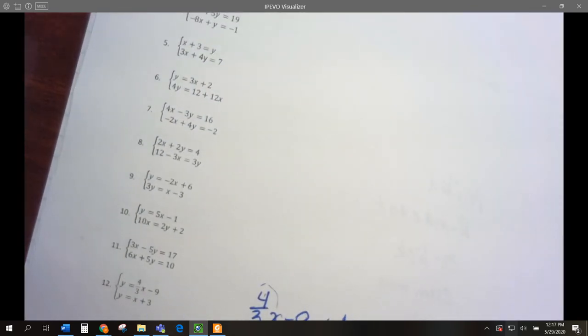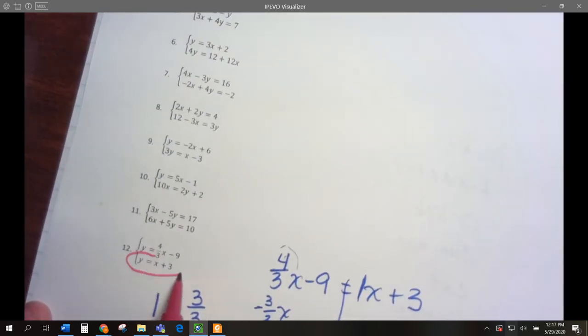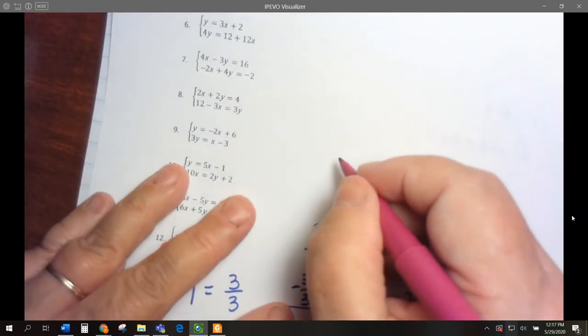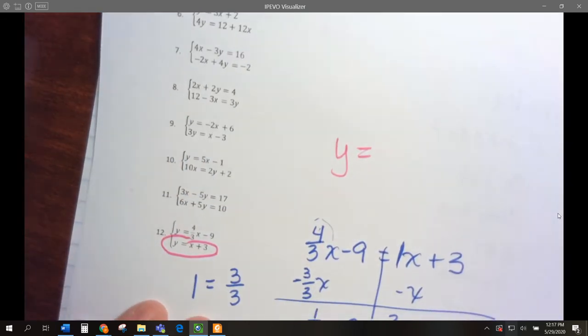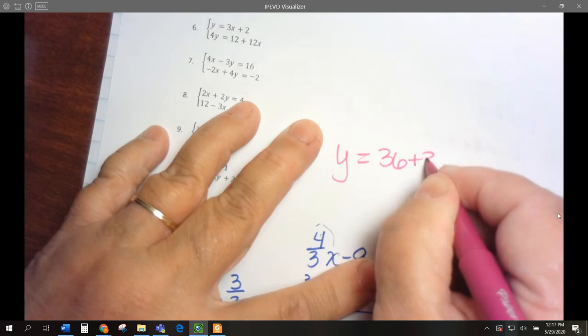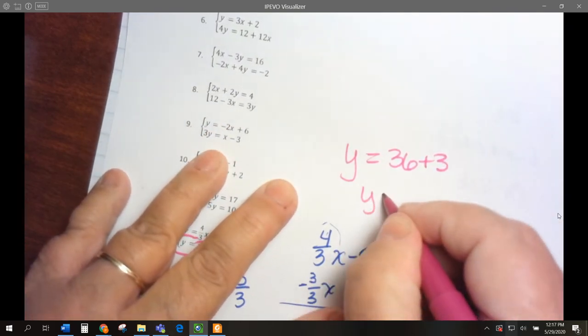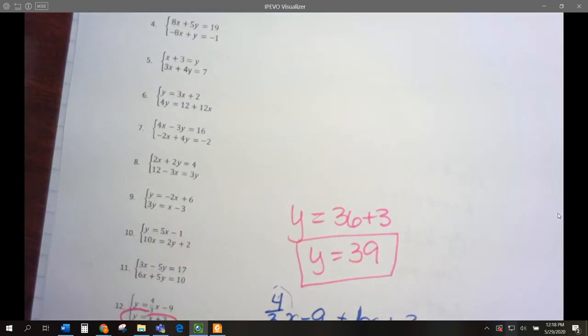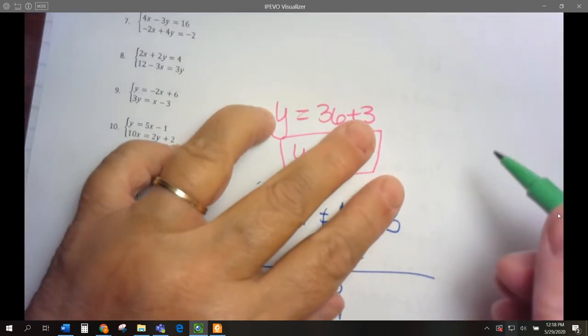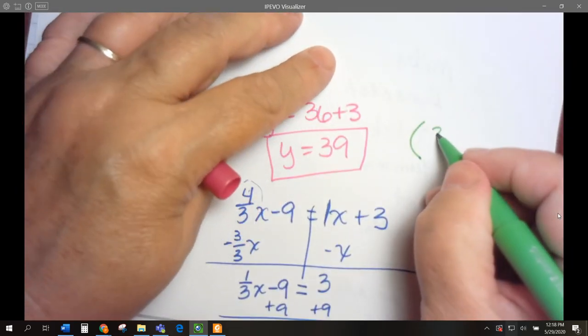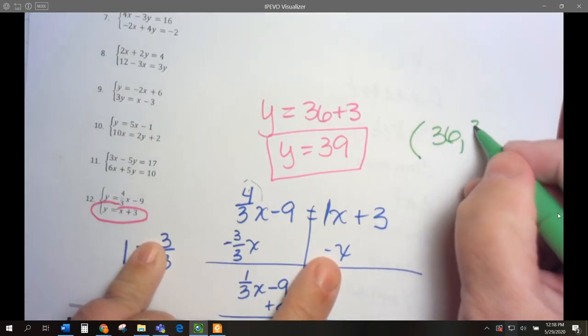So we know our x is 36. Let's go to this equation here. y equals x plus 3. y equals x, what's our x? 36 plus 3. 36 plus 3 is 39, so y is 39. Our solution to this system of equations, our x is 36 and our y is 39.